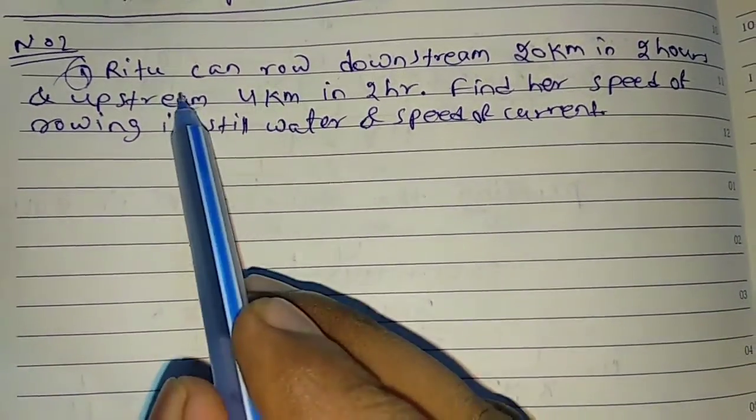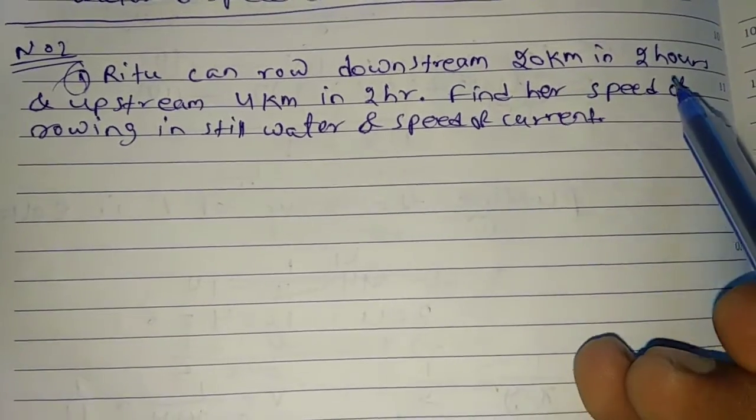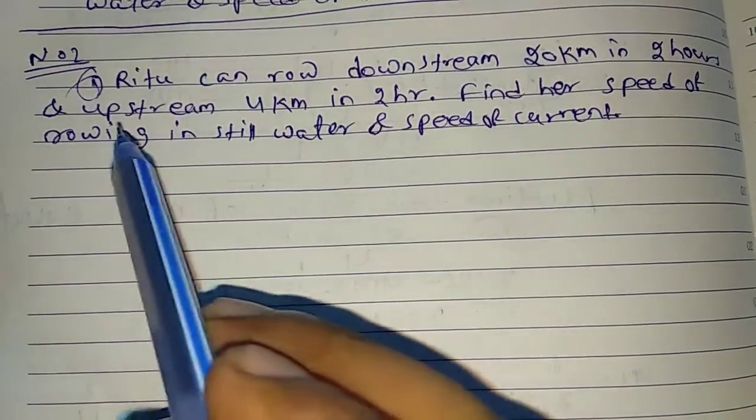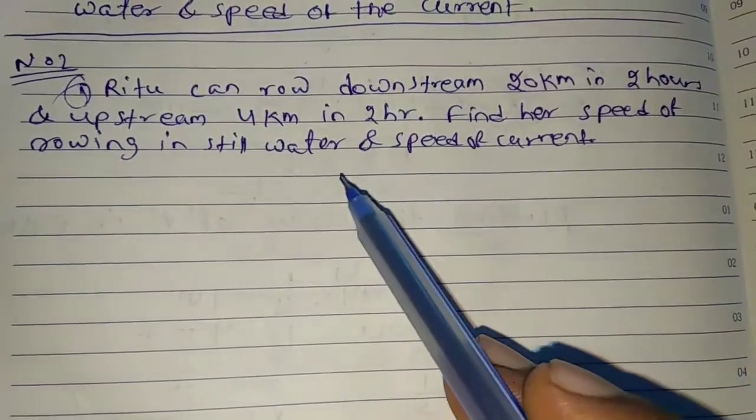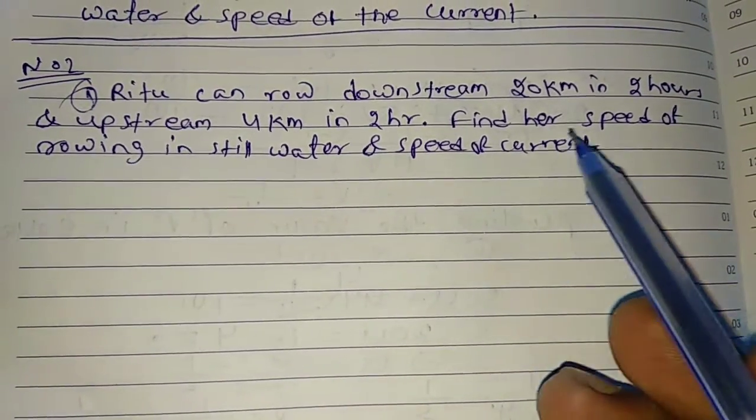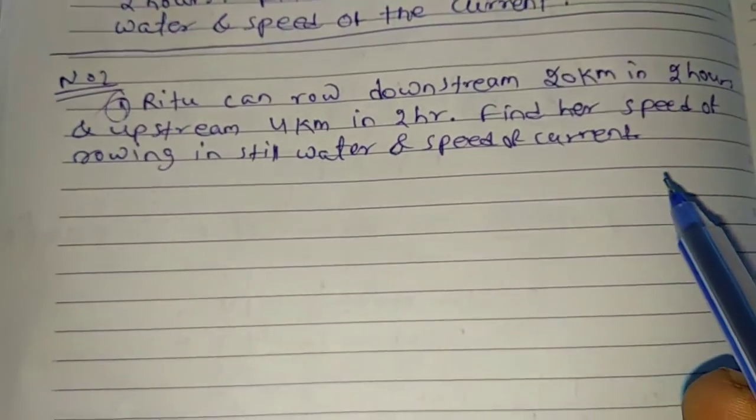Ritu can row downstream 20 km in 2 hours and upstream 4 km in 2 hours. Find the speed of rowing in still water and speed of current.